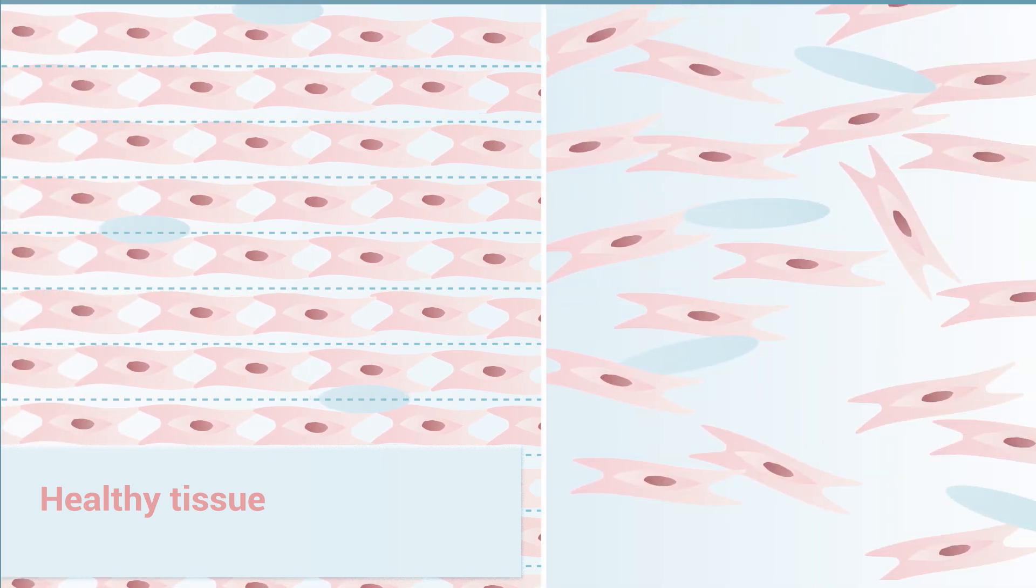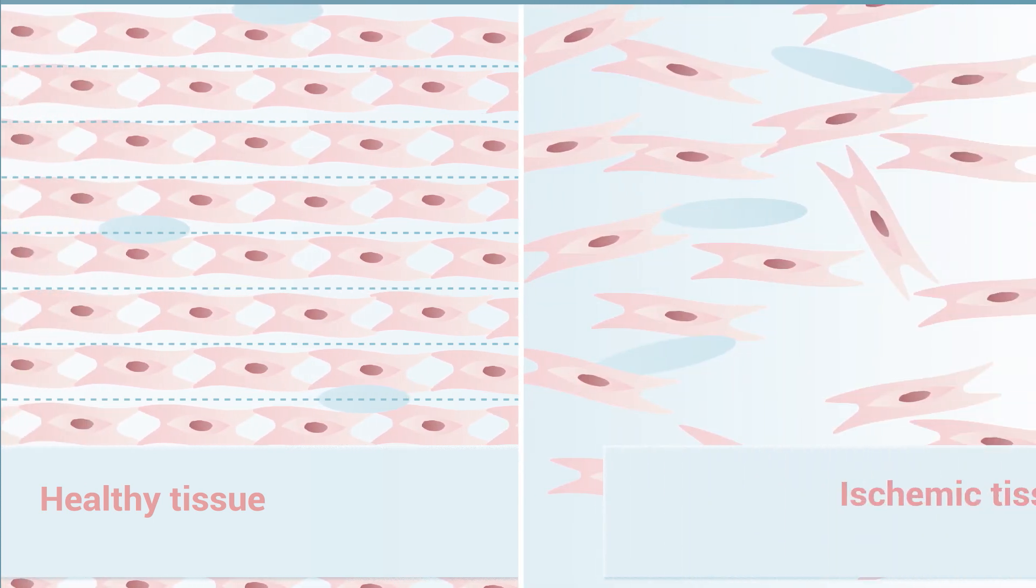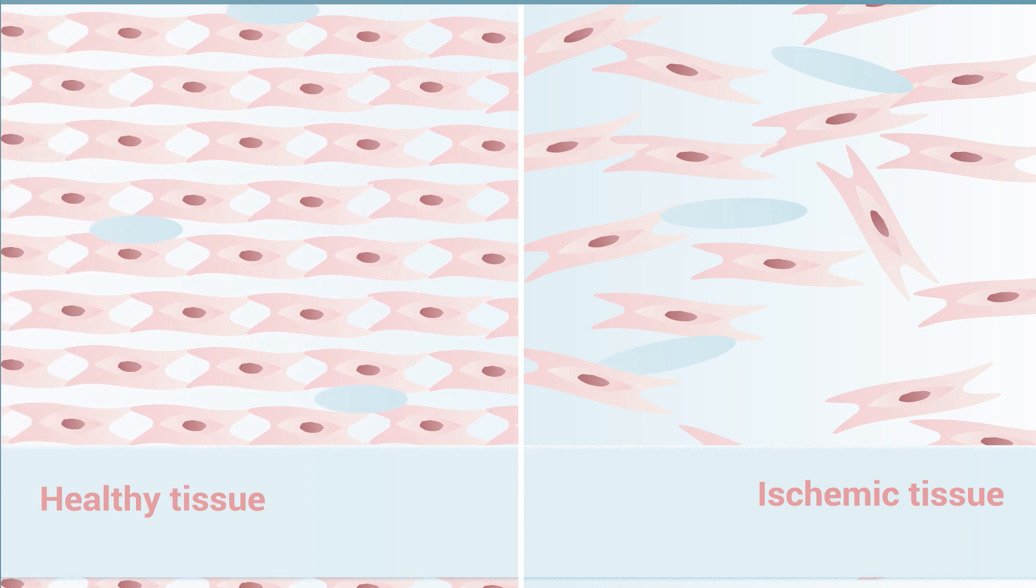The cardiac cells must have a specific orientation to produce an adequate contraction. This organization is lost in ischemic heart disease and can't be recovered just by replacing the injured tissue.